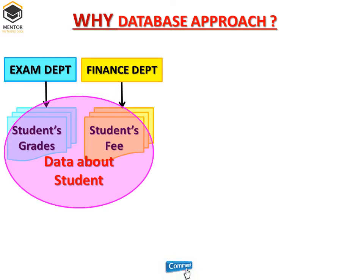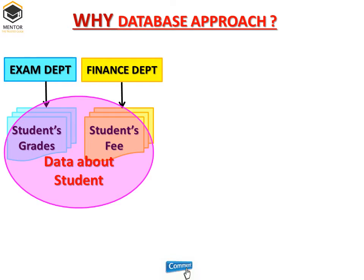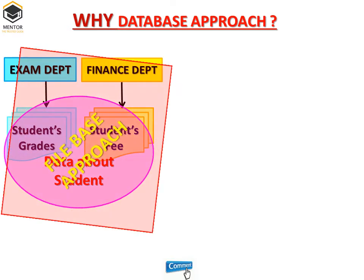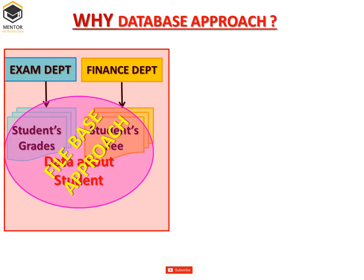Although both users are interested in data about students, each user maintains separate files and programs to manipulate those files, because each requires some data not available from the other users' files. This redundancy in defining and storing data results in wastage of storage space and redundant efforts to maintain common up-to-date data. This entire approach is called the file-based approach or traditional file system, wherein redundant data will be there and updation of redundant data is not possible.